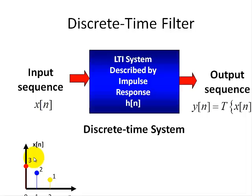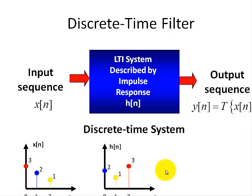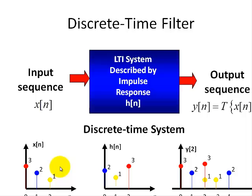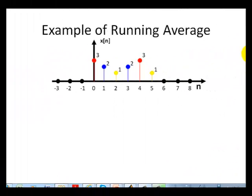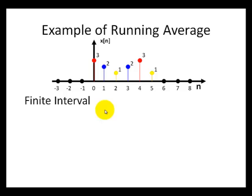Here we have an output sequence X sub n and this filter description. We need to select the coefficients at various places in time to give us a desired output. This is a pictorial view of what a discrete time filter is, and our focus will be a finite impulse response filter, or FIR filter. We're going to do a simple FIR filter that performs a running average. The input sequence has a finite interval from 0 to 5, which is why it has finite length.